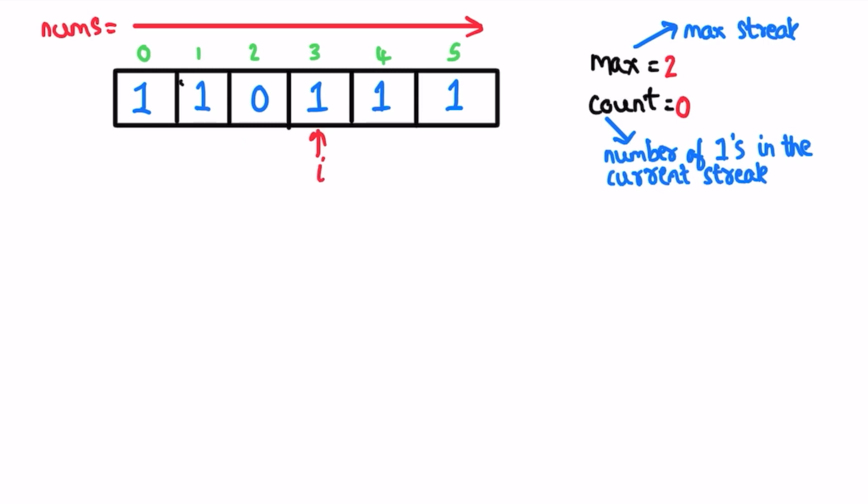Go for the next element, it is one, so increment count. Max of count and max is two comma one, so max will remain two. Go for the next element.